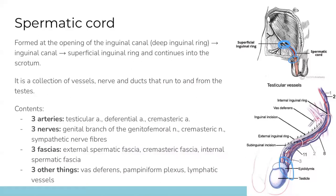The main thing to know about the spermatic cord is its contents. A helpful way to remember them is that there are three of everything: three arteries — the testicular, deferential, and cremasteric arteries; three nerves — the genitofemoral, cremasteric, and sympathetic nerve fibers; three fascial layers — the external spermatic fascia, internal spermatic fascia, and cremasteric fascia. And three other things: the vas deferens (also known as the ductus deferens), the pampiniform plexus, and lymphatic vessels.